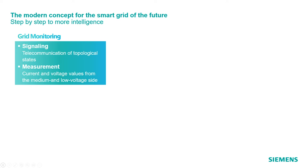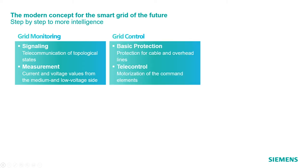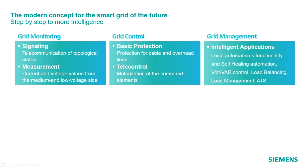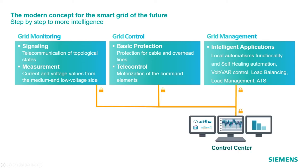Let's start with a modern concept for the smart grid of the future. It's a step-wise approach, starting from grid monitoring, signaling and measurements, going over to grid control, where basic control functionality and protection is integrated. This leads finally to grid management with intelligent applications for local automation functionality, load balancing, automatic sound transfer, and so on. All three pillars are connected to the control center for grid monitoring, grid control and grid management functionalities.